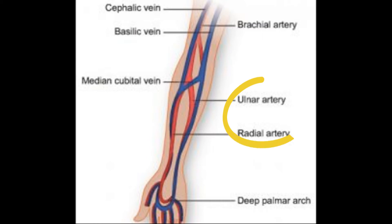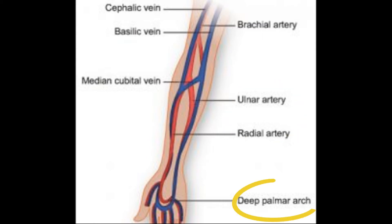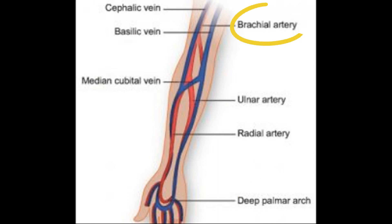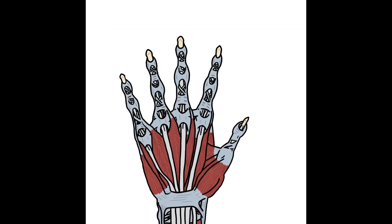You have the ulnar and the radial arteries giving us a deep palmar arch, and it's the same for the veins. The arteries come from the brachial artery, and the veins drain into the cephalic vein.